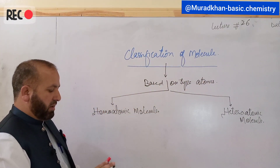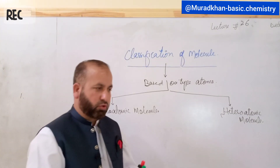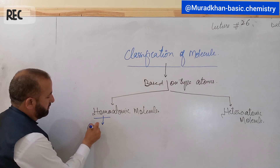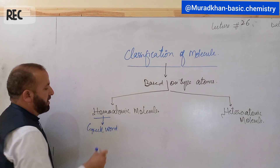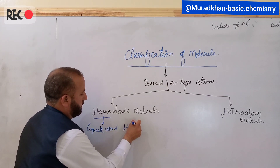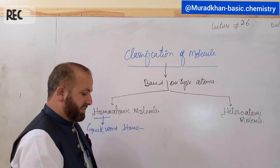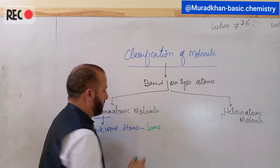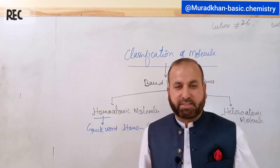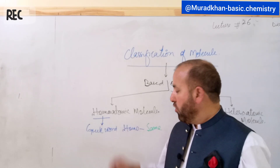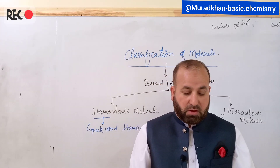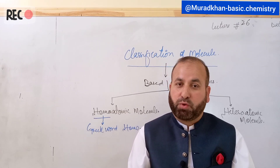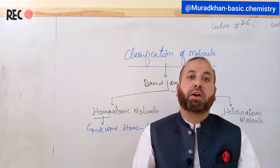Homoatomic molecules — the word 'homo' is derived from a Greek word which means 'same.' So homoatomic molecules are defined as those molecules which are made up from the same type of atom. Such molecules are also called homonuclear molecules.